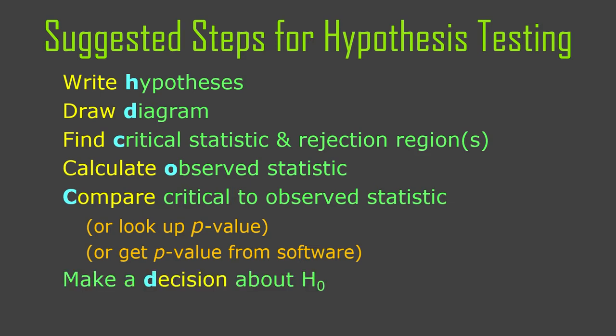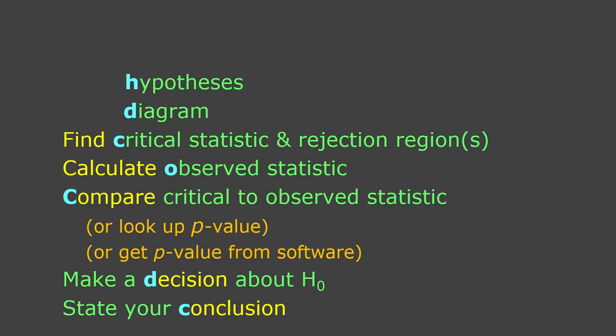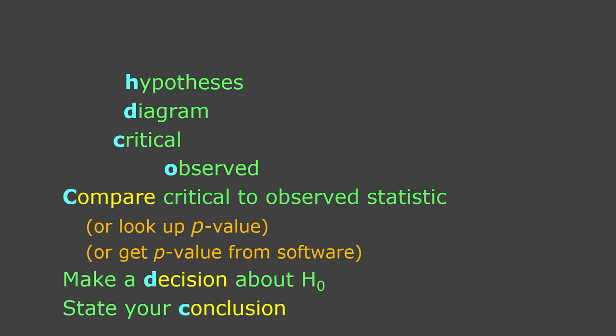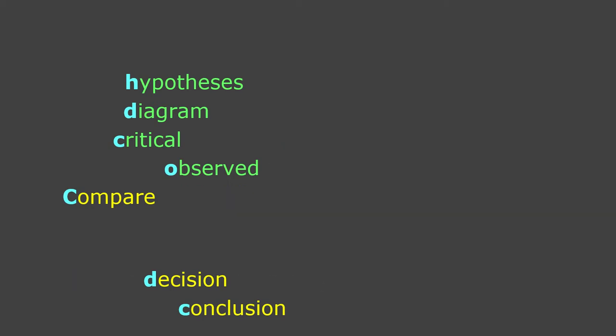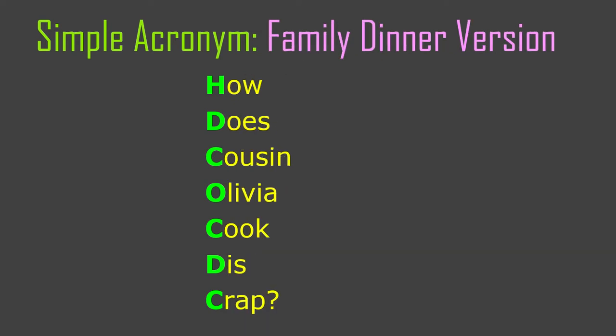Finally, you need to make a decision about the null hypothesis and state your conclusion. Now there's a case to be made that this should be a shorter list or more zippy and easy to remember. You could strip it down to its bare essentials and take the letters HDCOCDC and make handy mnemonic versions to help you remember all the steps. But that's up to you.